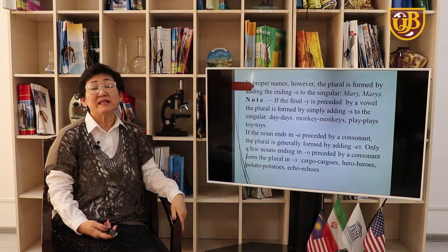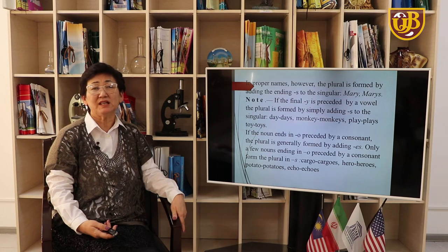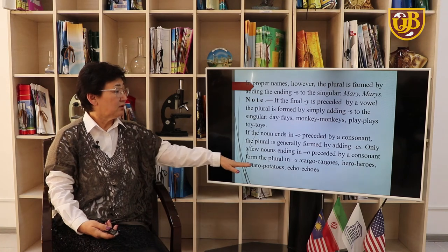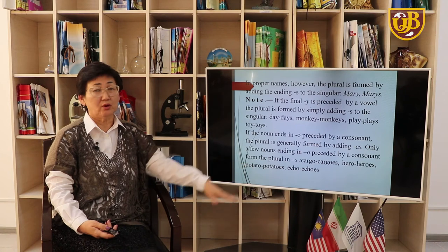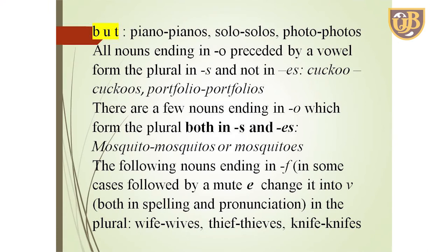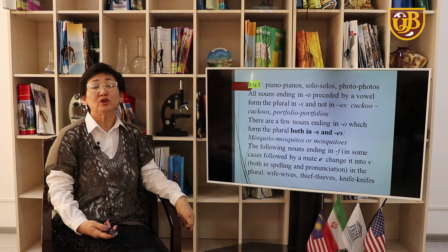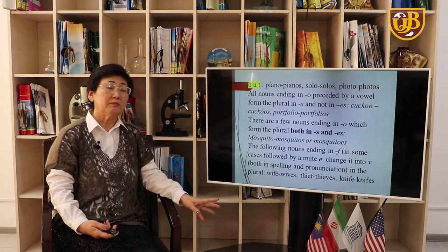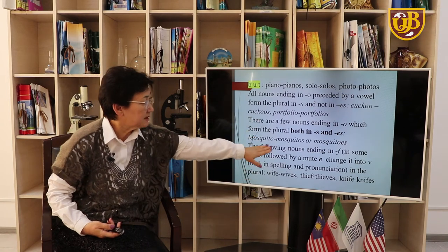If the noun ends in -o preceded by a consonant, the plural is generally formed by adding -es: cargo → cargoes, heroes, potatoes, echoes. However, there are exceptions that form the plural in -s: pianos, solos, photos. All nouns ending in -o preceded by a vowel form the plural in -s: cuckoos, portfolios. There are also a few nouns ending in -o which may form the plural both in -s and -es: mosquito or mosquitoes.